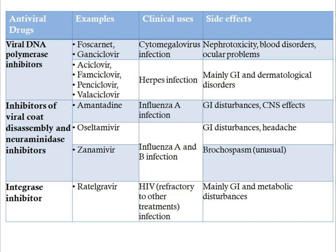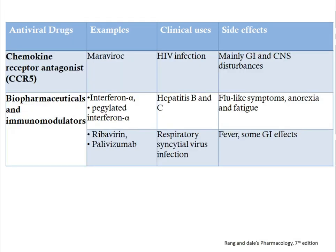The next class is integrase inhibitors, where raltegravir is the example. They are mainly used in HIV infection, and the side effects are GI and metabolic disturbances. Then chemokine receptor antagonists — maraviroc is the example — are used in HIV infection, with main side effects of GI and CNS disturbances.